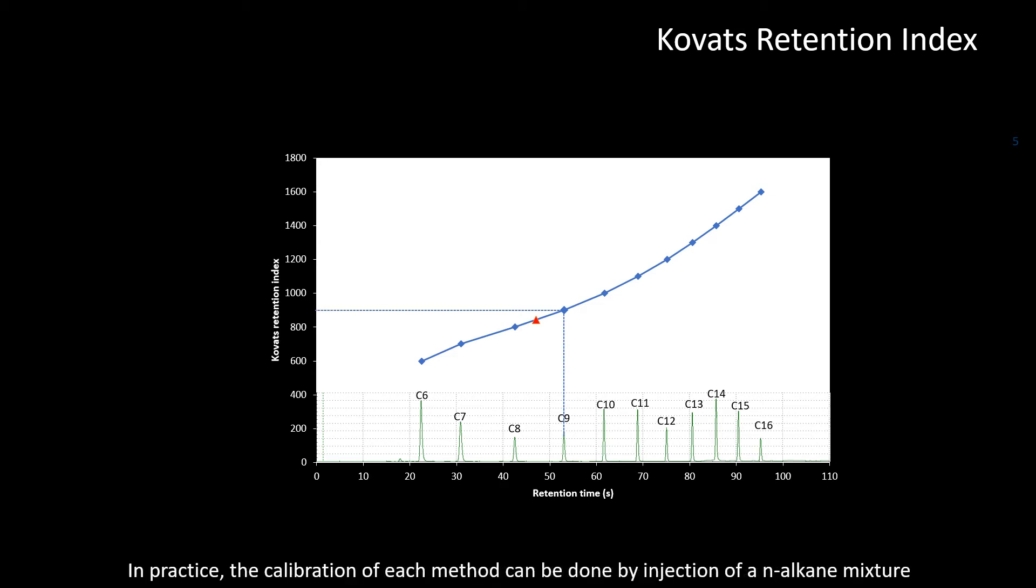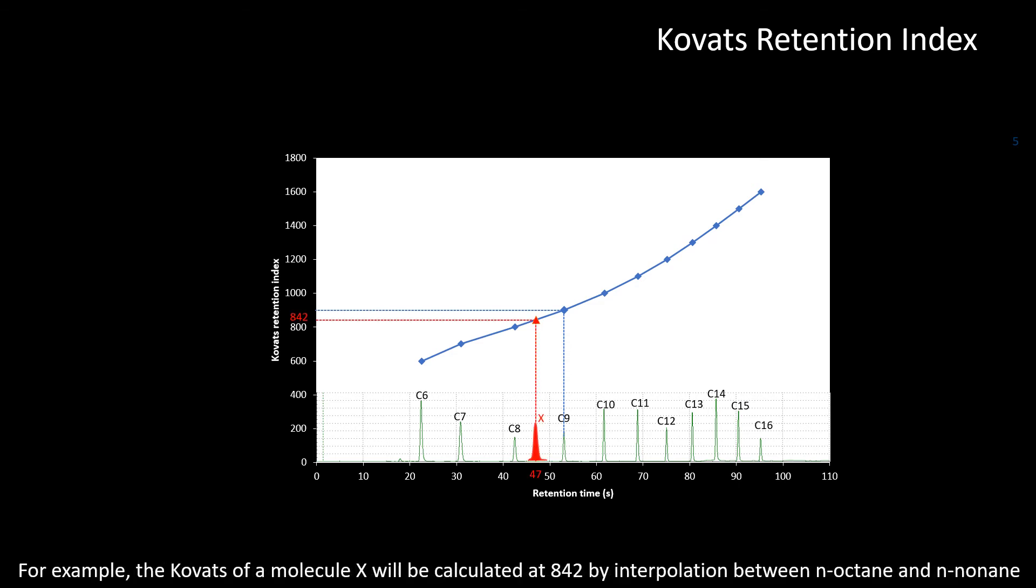In practice, the calibration of each method can be done by injection of an n-alkane mixture. The index of other molecules is calculated by interpolation with indices of immediate n-alkane numbers. For example, the Kovats of a molecule X will be calculated at 842 by interpolation between n-octane and n-nonane.